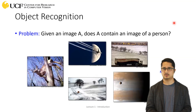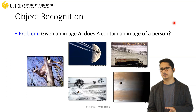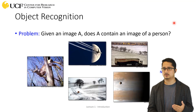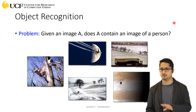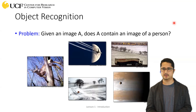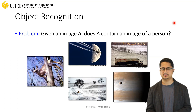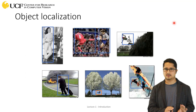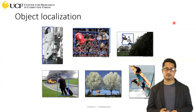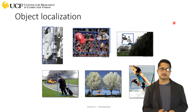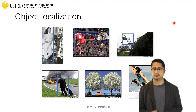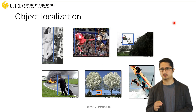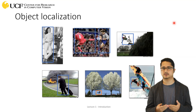Similarly, looking at the same problem — whether a person is present in an image or not — if we have this set of images, the answer will be 'no' because we don't see any person standing or doing something in these images. That was the first task, which is the basic task in computer vision. The second problem is localization, called object localization, also referred to as object detection.